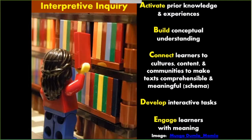So if we have to summarize: we want to activate their prior knowledge and experiences, we want to build conceptual understanding. When we connect learners to cultures, content from other disciplines and communities, we make texts more comprehensible and meaningful, because we give them personal experience and build schema that sets them up to have more context for what they're reading. We want to develop interactive things they can do with the text before they read, while they read, and after they read. And we want to engage them with meaning.